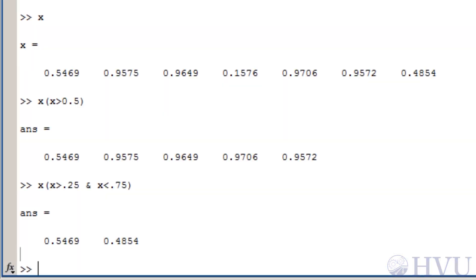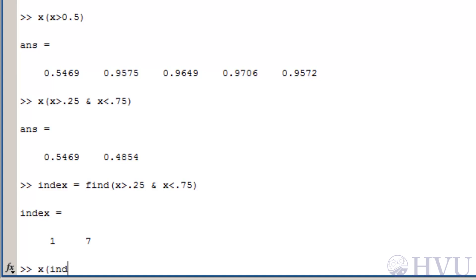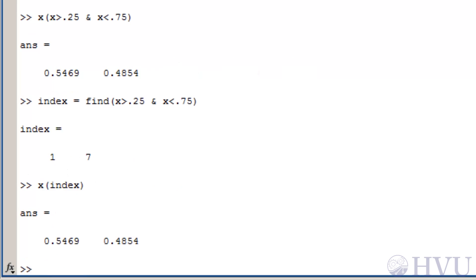To use the find command to determine the indices of the x array that are between 0.25 and 0.75, the syntax is similar to what I used before. This time, I'll define a variable named index which contains the indices of the appropriate values of x by typing index equals find of x greater than 0.25 and x less than 0.75. Of course, I could condense this into one command by typing x of find of x greater than 0.25 and x less than 0.75.